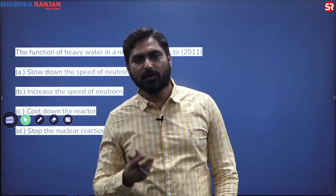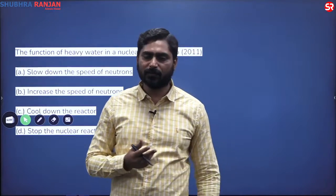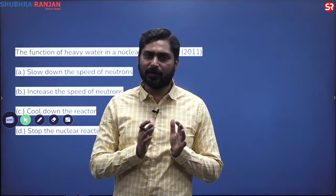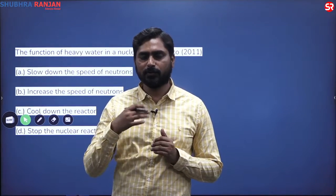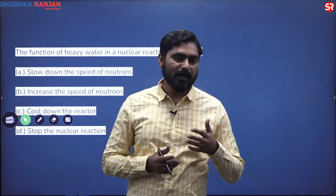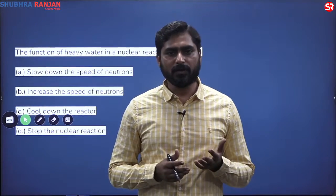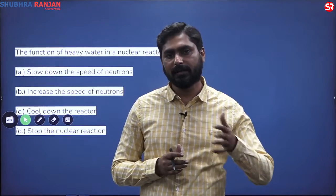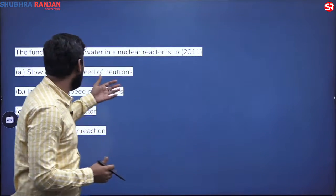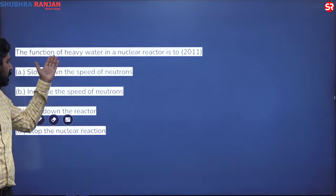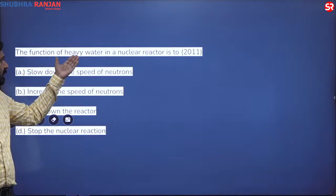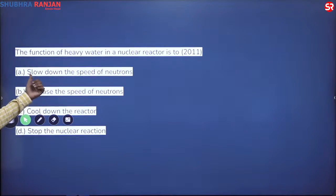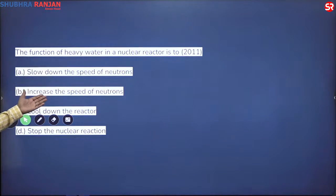Heavy water acts as a good coolant in nuclear reactors. The first option asks: 'the function of heavy water in a nuclear reactor is to slow down the speed of neutrons' — yes, this is correct. The second option says 'increase the speed of neutrons' — we do not want this, because in a fission reaction we want to slow down the speed of neutrons.